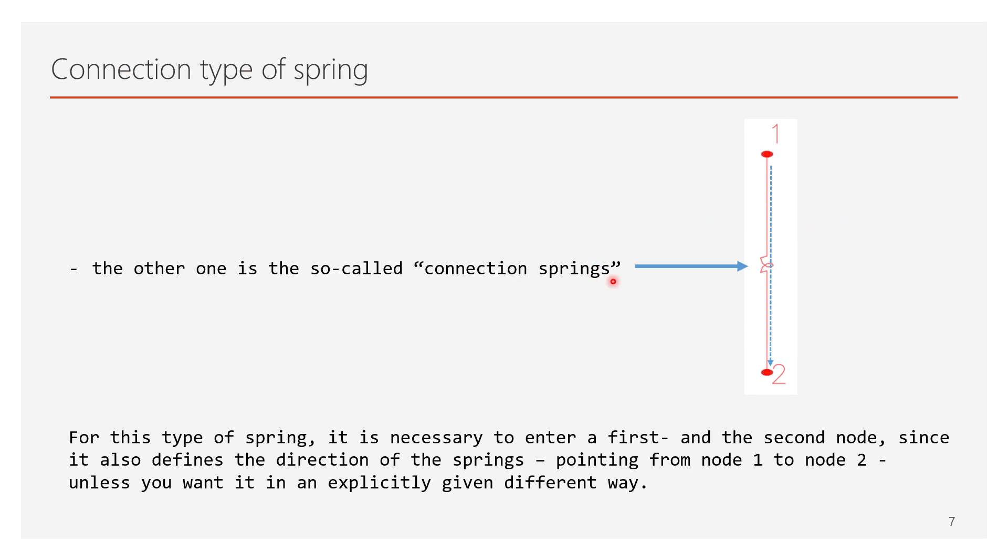For the connection type of spring elements, it is necessary to enter a first and a second node, since it also defines the direction of the springs, pointing from node 1 to node 2, unless you want it in an explicitly given different way.